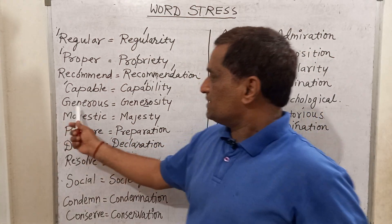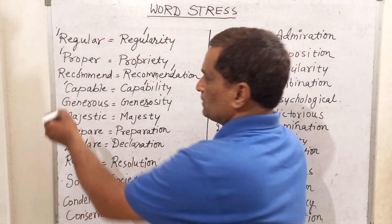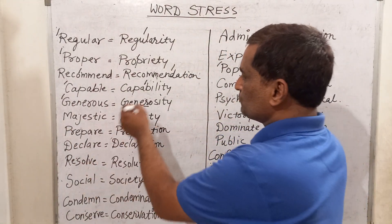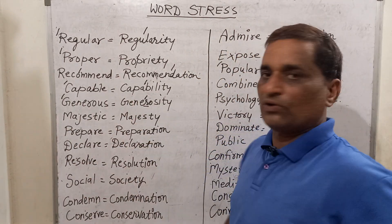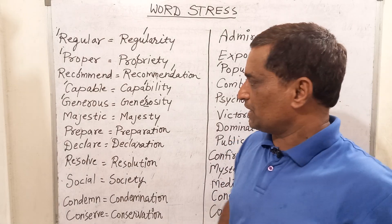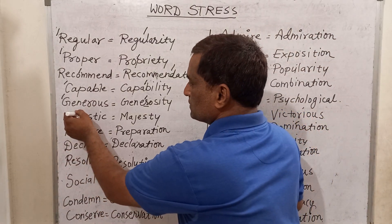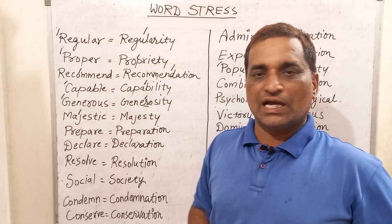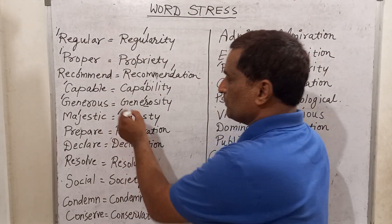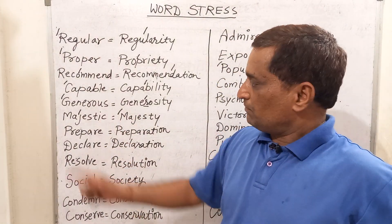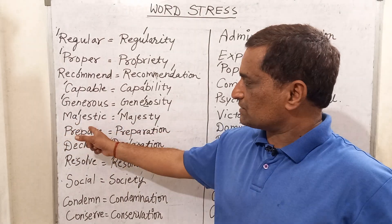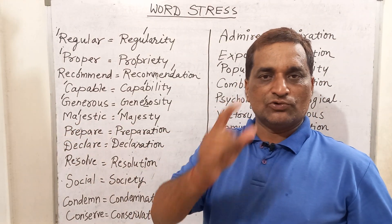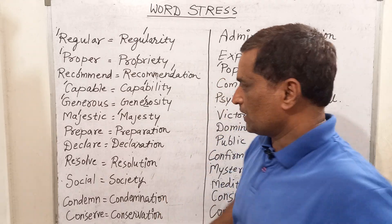Next is 'generous', which means generous or noble. The stress will come before G: 'generous'. And for 'generosity', the stress will come before R: 'generosity'. Next is 'majestic' — the stress will come before J: 'majestic'. And for 'majesty', the stress will come before M: 'majesty'. In that way, 'majestic' and 'majesty' — the stresses have been used with every word.